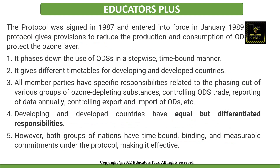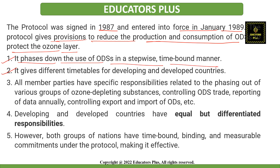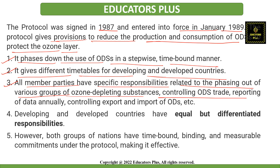Coming back to the Montreal Protocol — signed in 1987 and came into force in 1989 — the protocol gives provisions to reduce the production and consumption of ozone depleting substances. It phased down the use of ODS in a step-wise and time-bound manner. It gives different timetables for developing and developed countries. Member parties have specific responsibilities related to phasing out various groups of ozone depleting substances, controlling ODS trade, reporting data annually, and controlling export and import of ozone depleting substances.